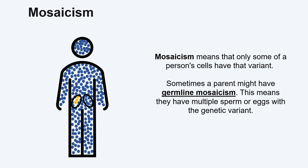Germline mosaicism can be identified if two siblings are found to have the same variant, but neither parent has that variant. When someone has germline mosaicism, they do not have symptoms associated with the variant, but they have a chance of having children with a variant in all of the child's cells.